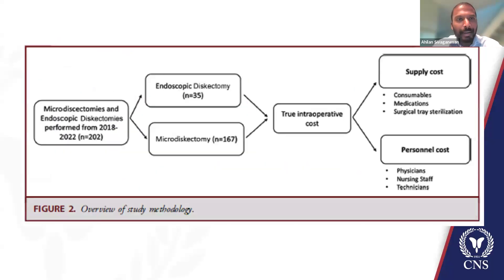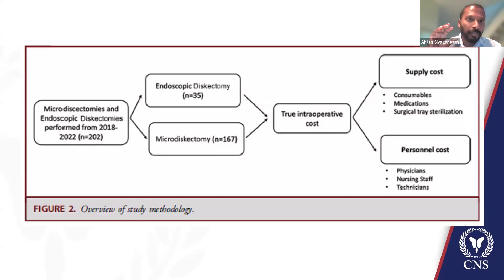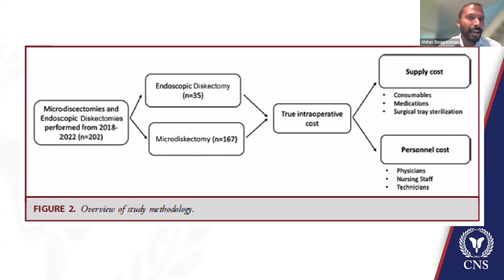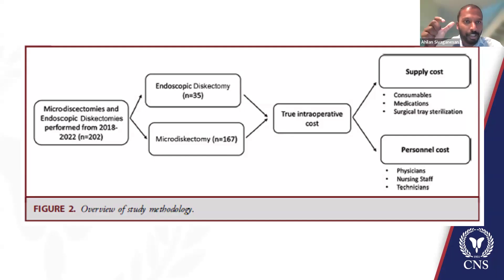The quick summary of what we found is that when we did an adjusted analysis — looking at all the available confounders that we know affect cost, including who the surgeon was, certain comorbidities, and other diagnosis-specific factors — with all those adjustments, there was no statistical difference in the cost required to execute an endoscopic discectomy versus a microscopic discectomy. That's what we mean by marginal cost.